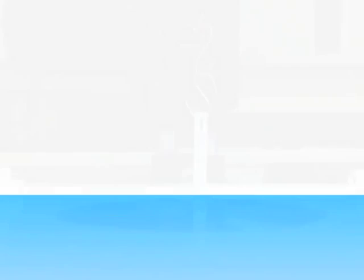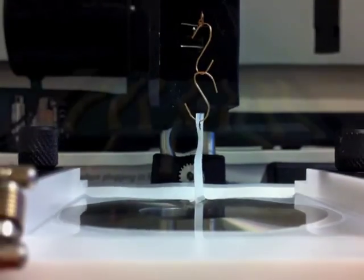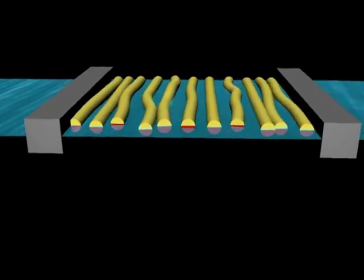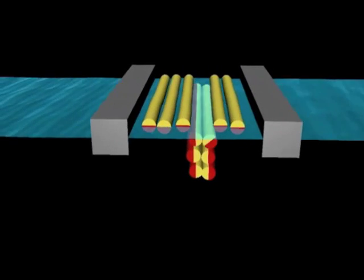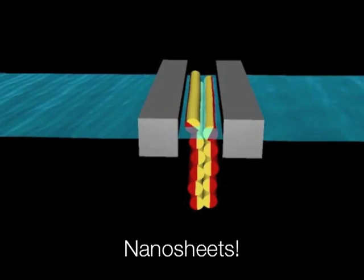So we began a detailed study of the air-water interface of these peptoid solutions and we found that during shaking, the monolayer essentially compresses, pushing the chains together and squeezing them out into a nanosheet.